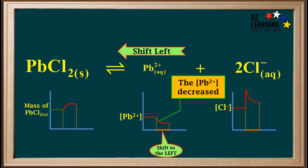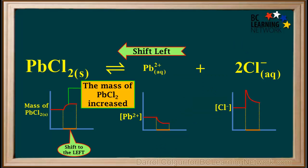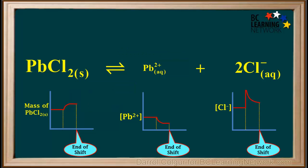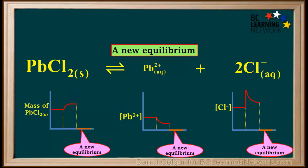During the shift to the left, the concentration of Pb²⁺ also decreased, but only half as much as the Cl⁻. This is due to the 1 to 2 coefficient ratio of Pb²⁺ to Cl⁻. And during that same shift to the left, the mass of solid PbCl₂ increased. Now that the shift is complete, a new equilibrium has been established, and the ion concentrations and the mass of the solid will remain constant.